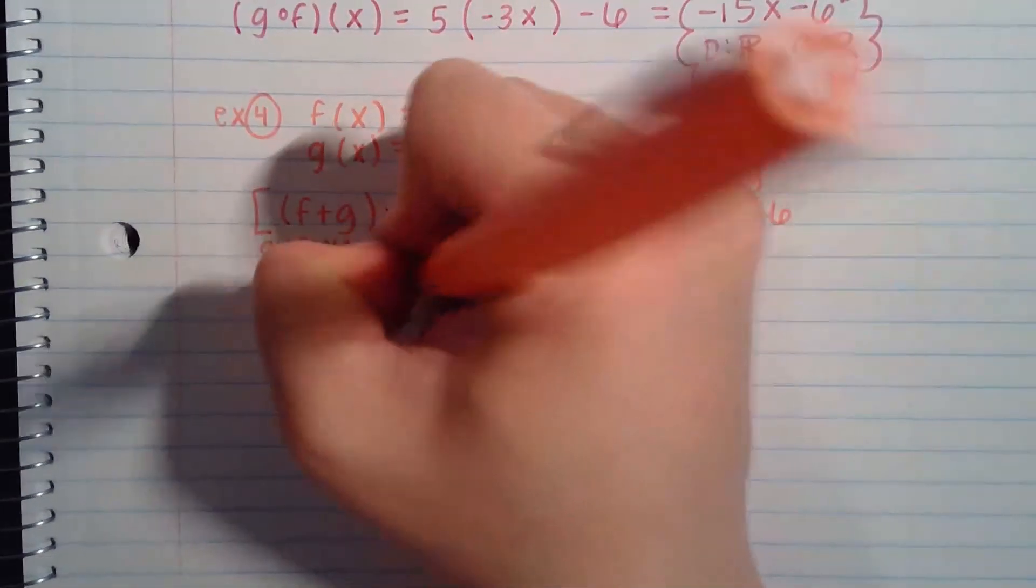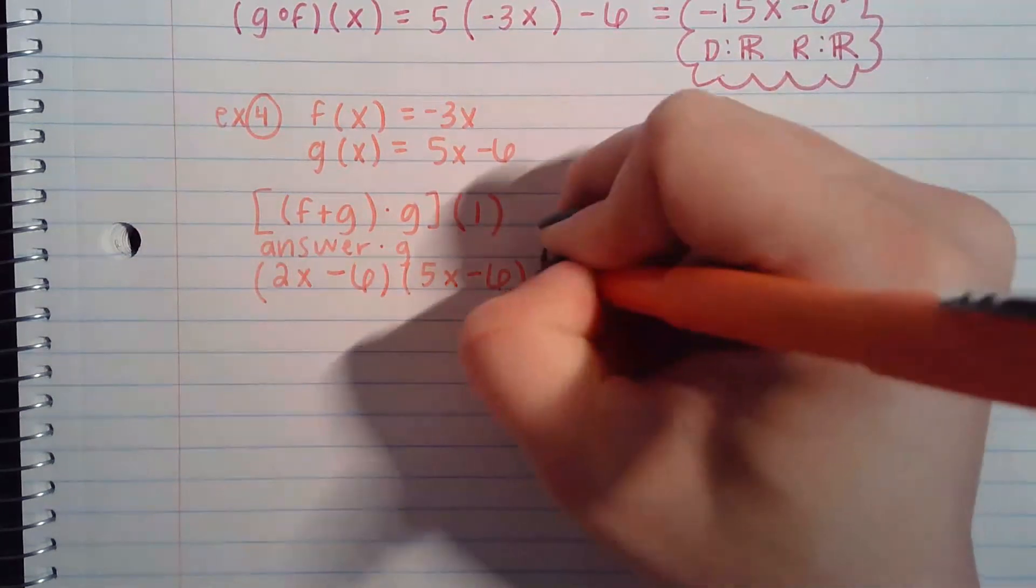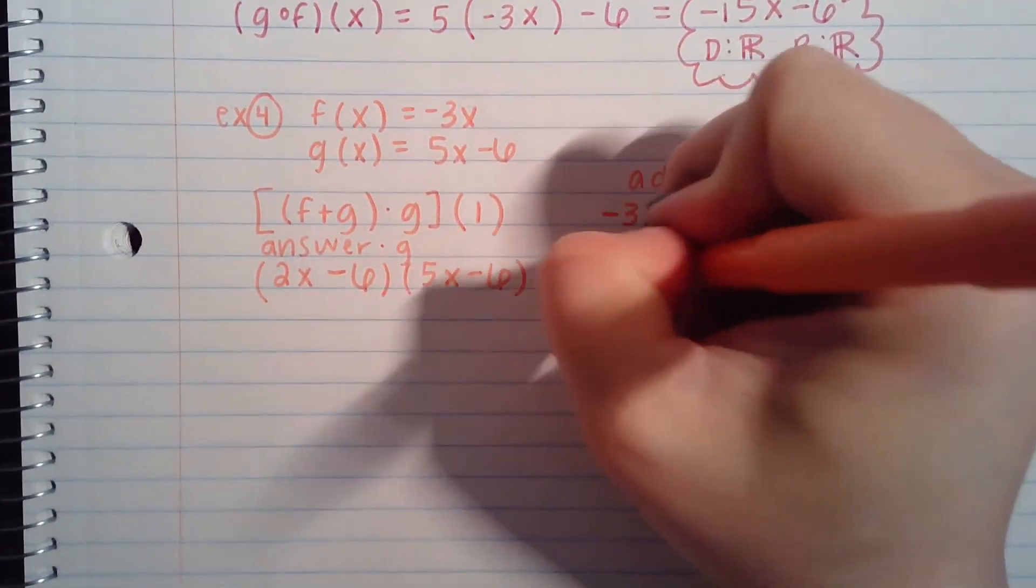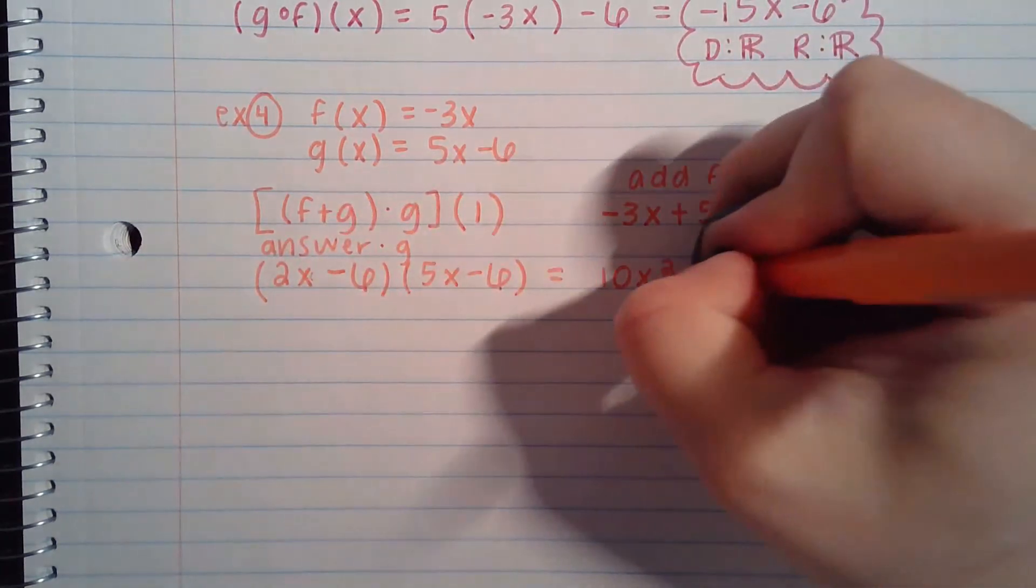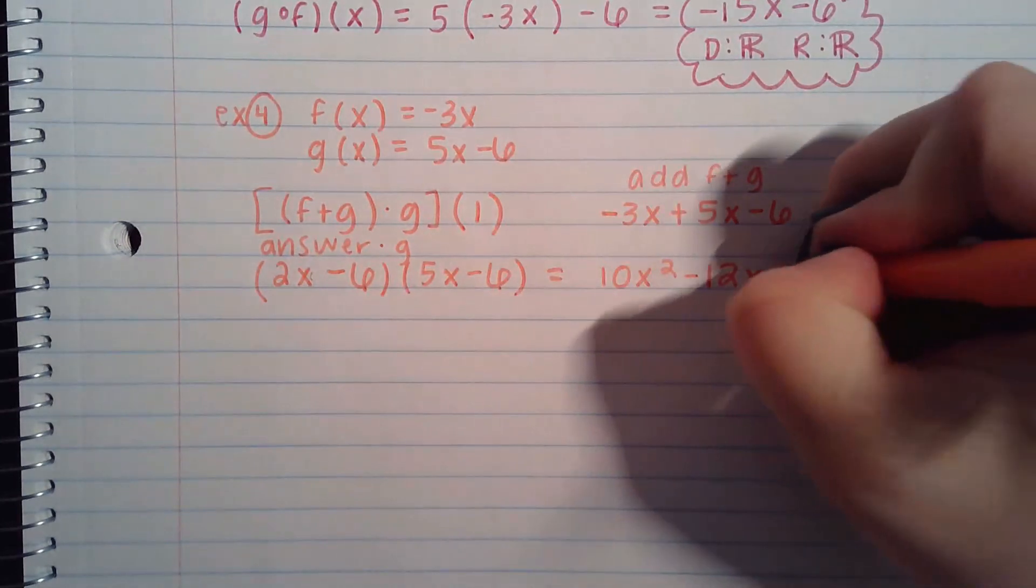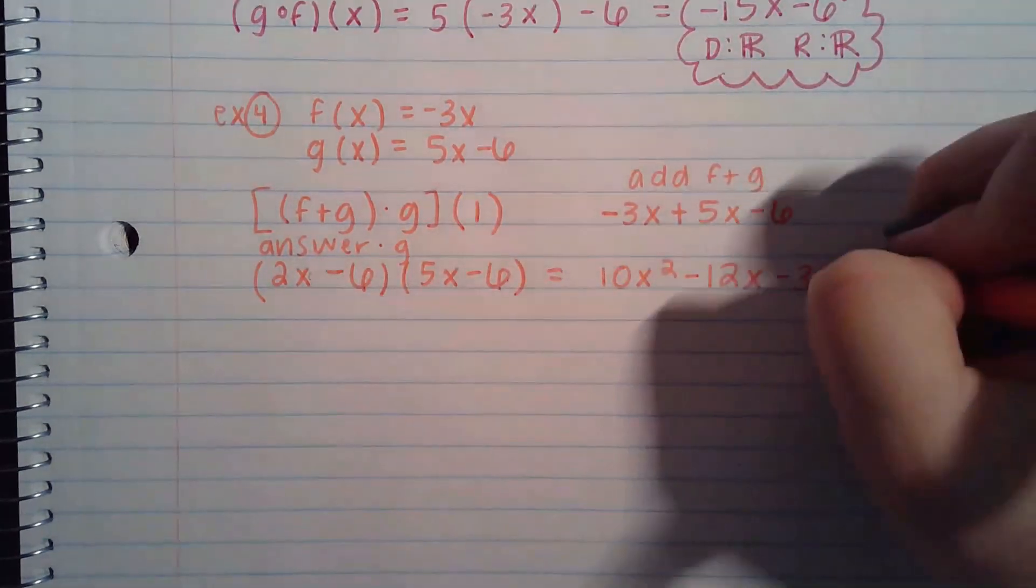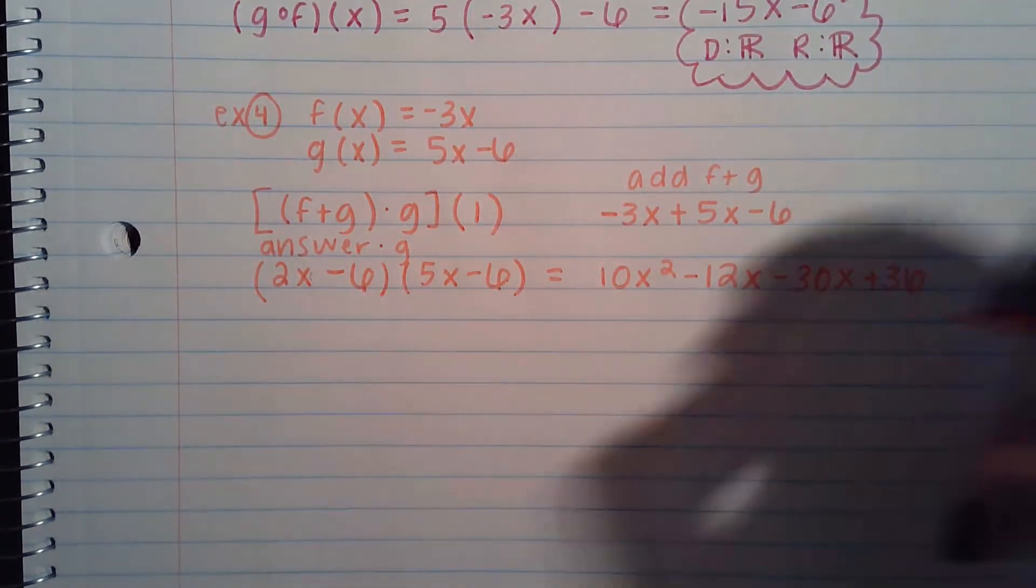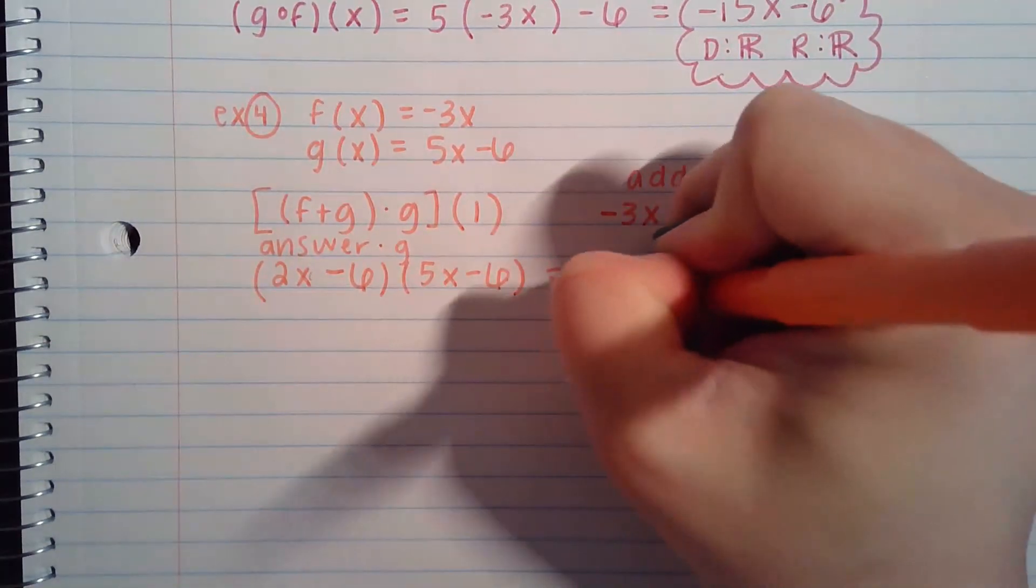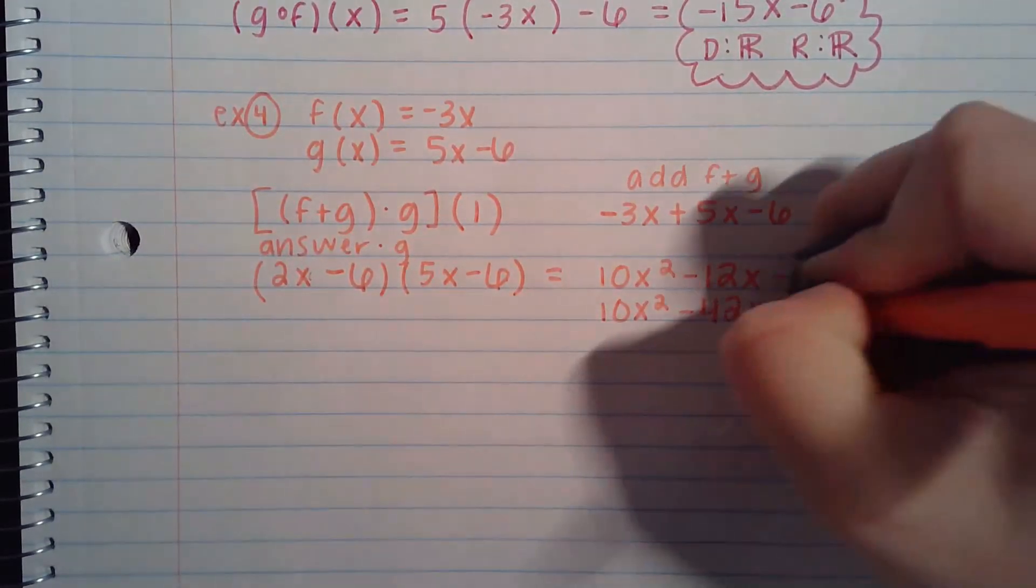So then we're going to take this and multiply this times 5x minus 6. This would be a foiling step. 2x times 5x is 10x squared. 2x times negative 6 is negative 12x. Negative 6 times 5x is negative 30x. Negative 6 times negative 6 is positive 36. Combine any like terms you might have. So that would be 10x squared minus 42x plus 36.